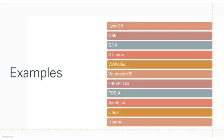Let us discuss some examples of RTOS — a very important question in a lot of interviews. The examples are: Lynx OS, OSE, QNX and its lighter version QNX Neutrino, RTLinux, VxWorks, Windows CE, FreeRTOS (which is generally seen in circuit boards), POSIX (which is a real-time standard), Symbian, Linux, and Ubuntu. These are the various real-time operating system examples.